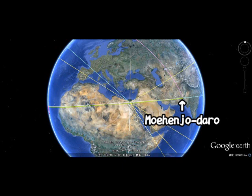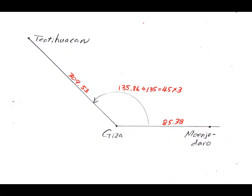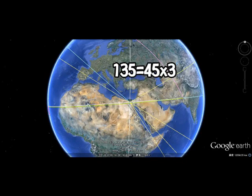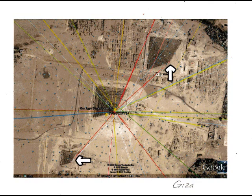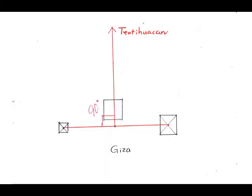It's a matter of whether you are skeptical of me or not. But have a look at this angle between Mohenjo-daro and Teotihuacan — almost 135 degrees, which is 45 multiplied by 3. Now look at these 2 pyramids: the line between them at 90 degrees will take you to Teotihuacan.